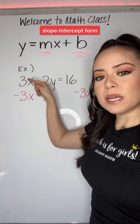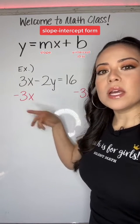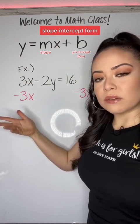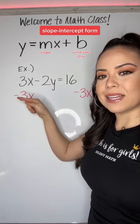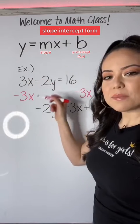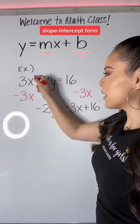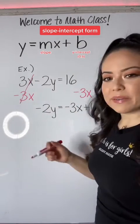To make it zero, you need to think about inverse operations. The inverse of positive is negative. 3x minus 3x cancel, make zero.